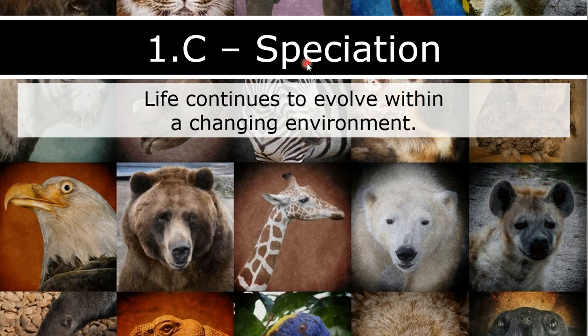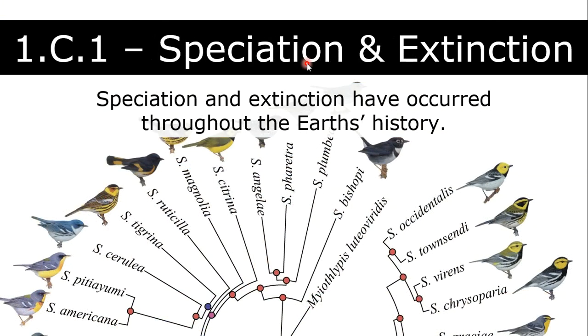Now I want to talk about the act of speciation — the creation of a new species. This happens through those little changes we talked about, just a collection of little changes over time until eventually you get two distinct species. We've seen this happen within our lifetimes, and we see evidence of it across the entire fossil record and all the lines of evidence of evolution from previous chapters.